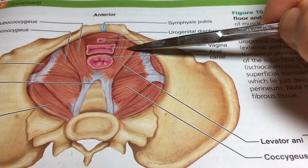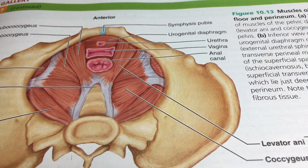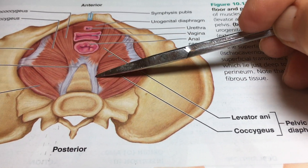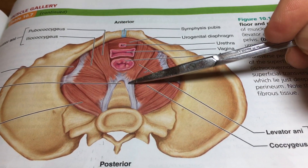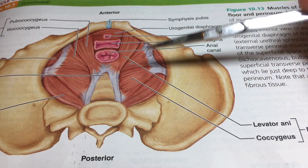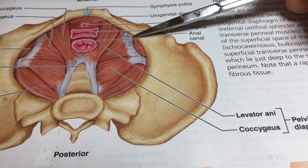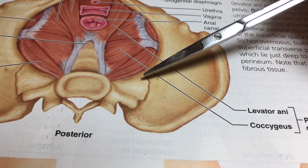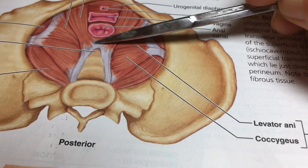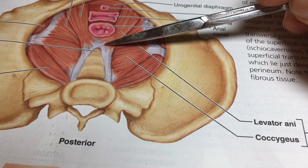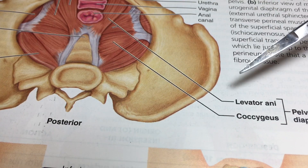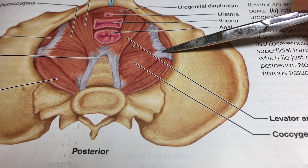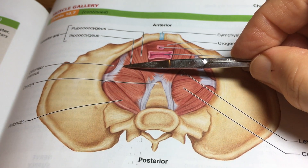We have the musculature here which provides support for the floor. Here we have levator ani and we have coccygeus. This muscle here with this tendon going this way - that's levator ani. This group of muscles through here with this tendon running this way - that's defining coccygeus. So we have two major muscles: levator ani, which is mostly overlying the whole central region, and we do have a left and a right coccygeus. Here we have that arch of tendon right here.